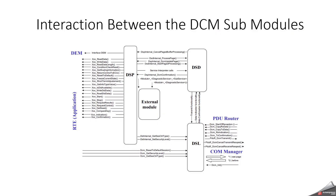DSD acts as a router that determines which service the diagnostic request belongs to and which handler should process it. It will parse the service ID from the request, determine if the SID is supported in the current session or security level, and forward the valid request to DSP. DSD is like a traffic controller or dispatcher — it routes incoming requests to the right processing function.